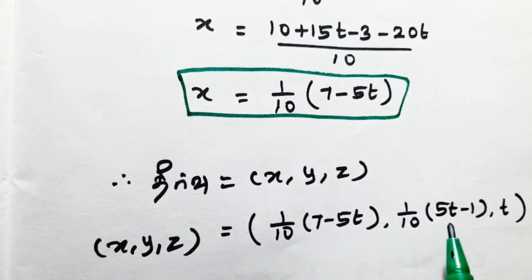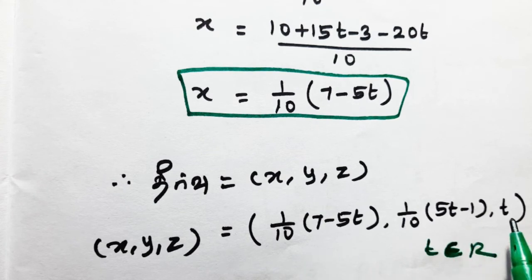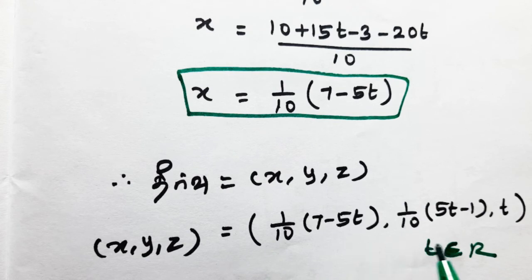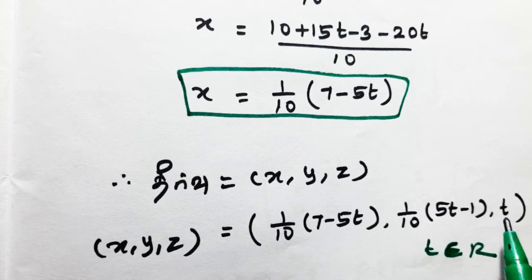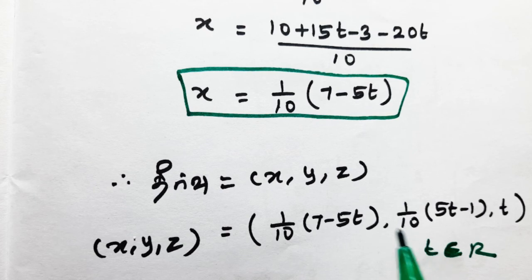If we assign T as a real number, we get one solution. For example, if T equals 0: x = 7/10, y = -1/10, z = 0 — that is one particular solution. For any value of T we substitute, both x and y values change accordingly, and each set of values satisfies the original equations, giving infinitely many solutions.